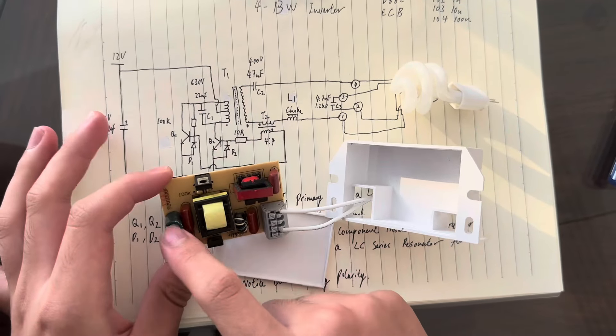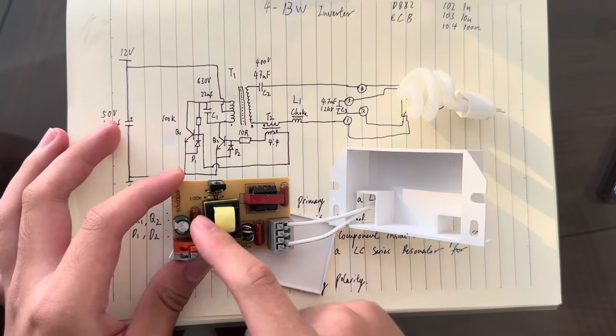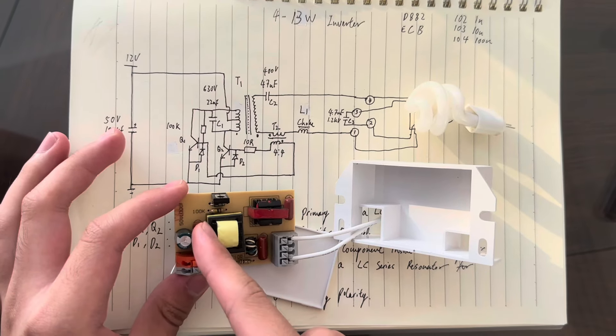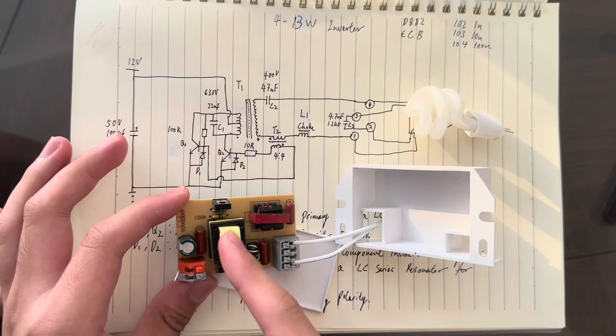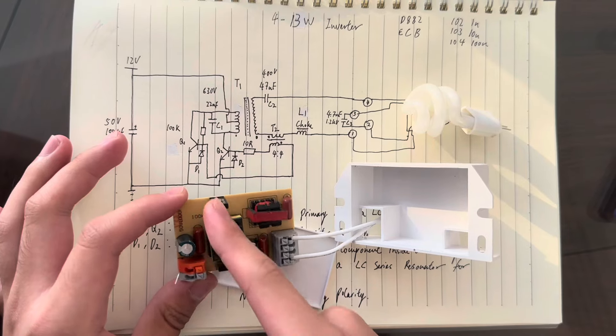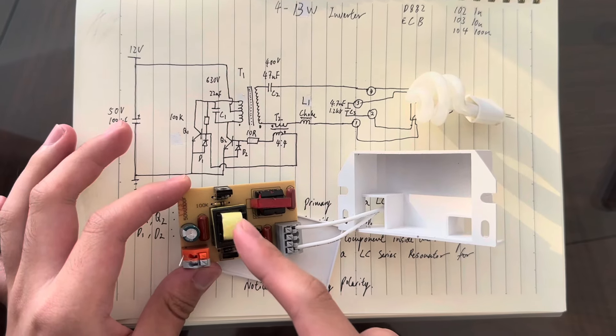There's an electrolytic capacitor for rectification, a LC first resonator tank with the first step-up transformer, two-transistor of D882.